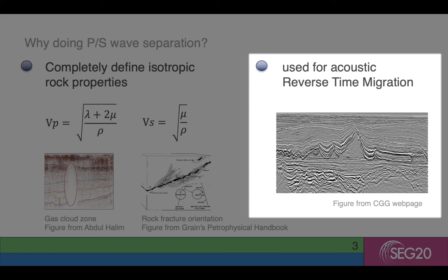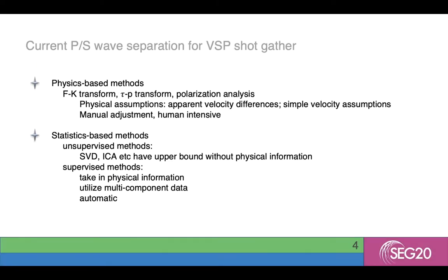Migration using separated P and S waves reduces artifacts in the imaging. Current PS wave separation methods for VSP shot-gathers all have their limitations. Physical-based methods require apparent P and S velocity differences, and the geological structure of the subsurface has to be simple — these methods are hard to handle complicated situations. In real data processing workflows, experts usually need many techniques and tools to choose parameters, which is very human-intensive. In statistical methods, unsupervised methods such as SVD and ICA have their upper bound and are usually difficult to improve separation quality, because the link between physical and statistical parameters is not conspicuous, so experts cannot tune them well.